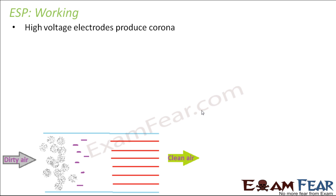High voltage electrodes are used and they produce a corona discharge — an electric discharge produced by ionization of a gas surrounding an electrically charged conductor. To explain the working simply using a diagram: this block represents the electrostatic precipitator. Dirty air — basically smoke containing gases from burning chemicals or plastics inside a factory — enters from one side.